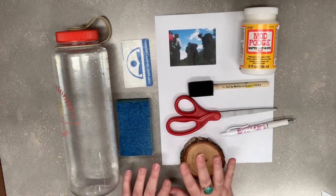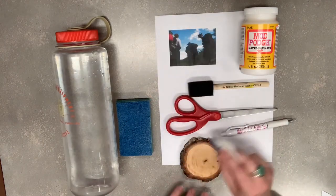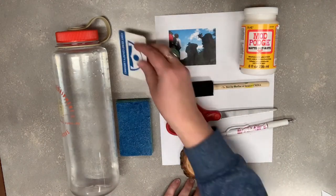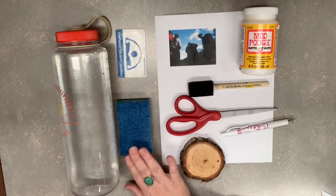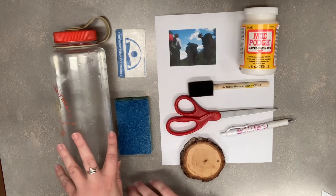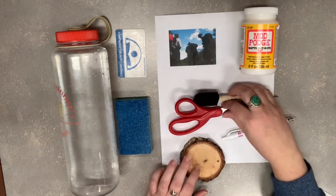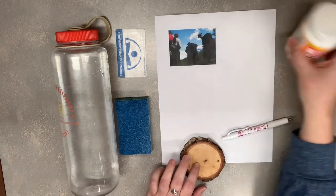You are also going to need something to smooth the air bubbles out of the glue and image. I'm going to use my library card for that. You will need a sponge and some water to remove the paper near the end of the transfer process. All right, so let me go ahead and move these supplies out of the way and we will get started.